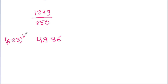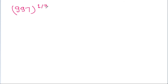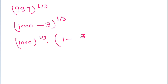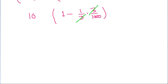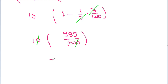If we have to find the value of (9.997)^(1/3), it can be written as (1000 − 3)^(1/3), which equals 1000^(1/3) × (1 − 3/1000)^(1/3). Since 1000^(1/3) = 10, applying the approximation gives 10 × (999/1000), and after cancellation we get 9.99.